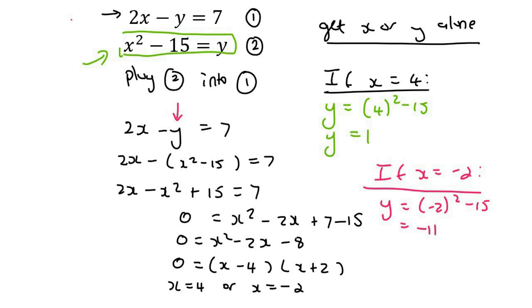So our final answers for this entire question are: when x was 4, y was 1. When x was minus 2, y was negative 11.